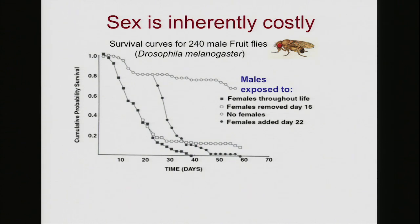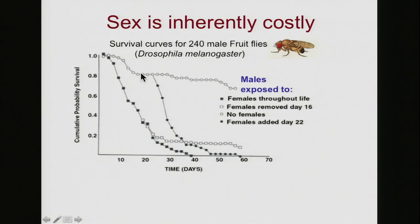If we have some male Drosophila leading a monastic life — kept in a jar with no females — then the risk of dying is very low. We still have 80% alive after three weeks, and about 75% alive after about 50 days.